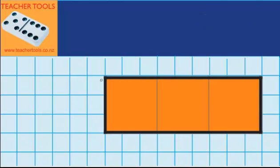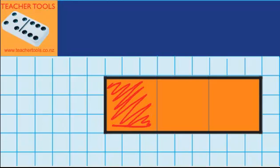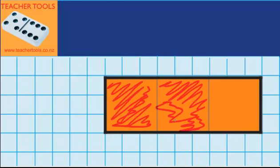Over here you can see I've got a shape which is split into thirds, and I'm going to shade in two of those thirds. I can write what that is — that's two thirds.